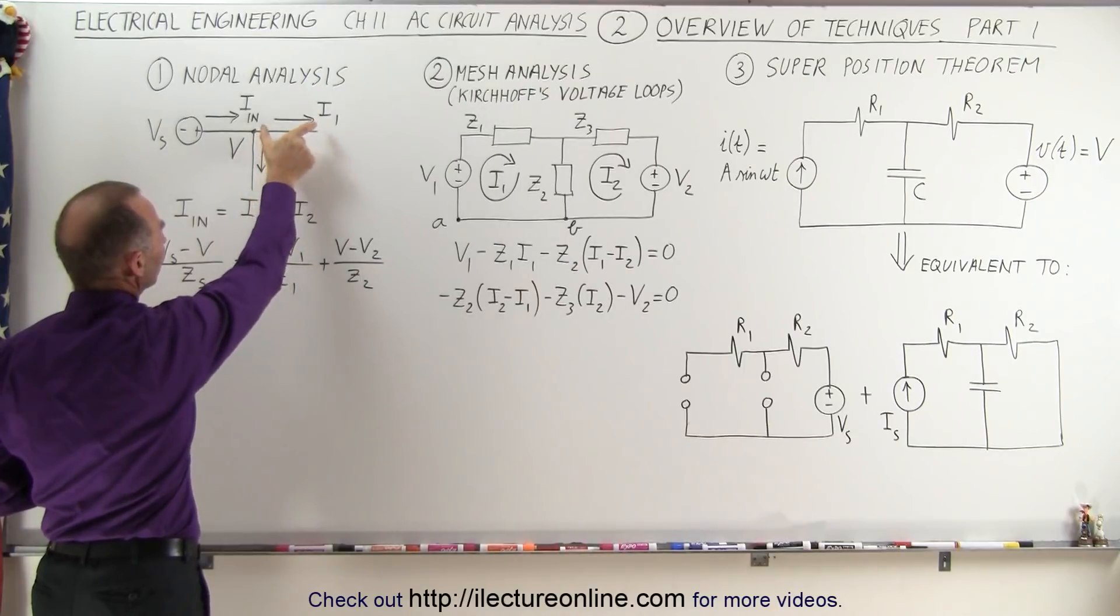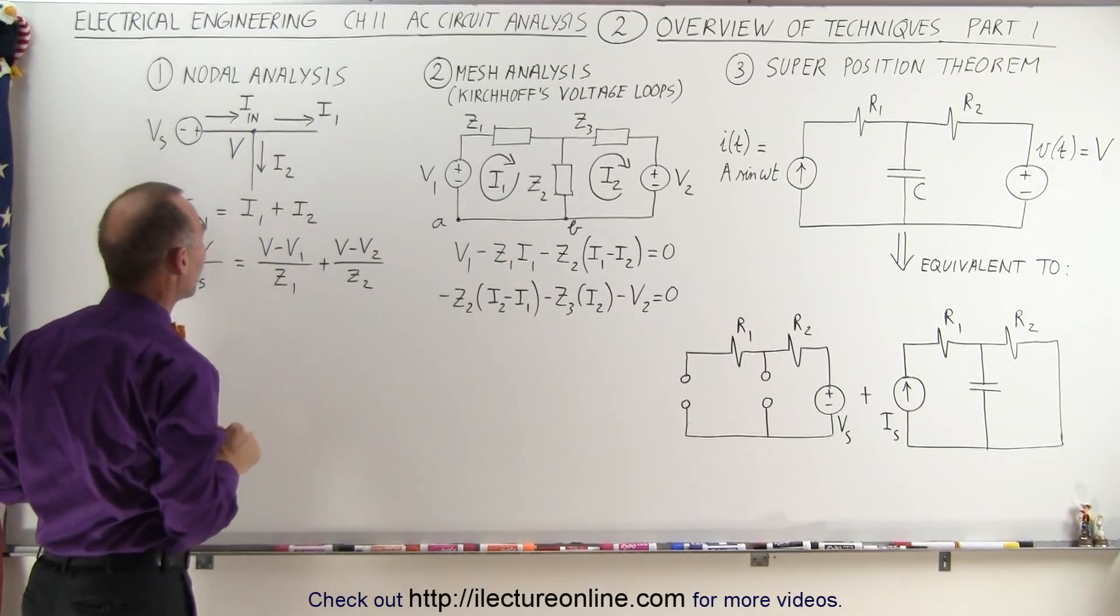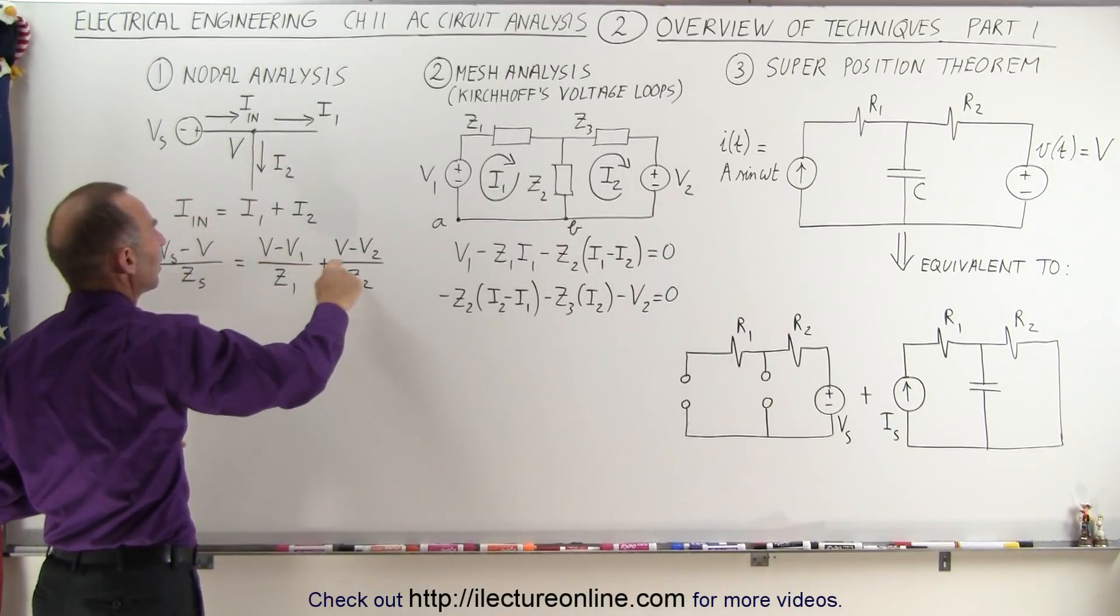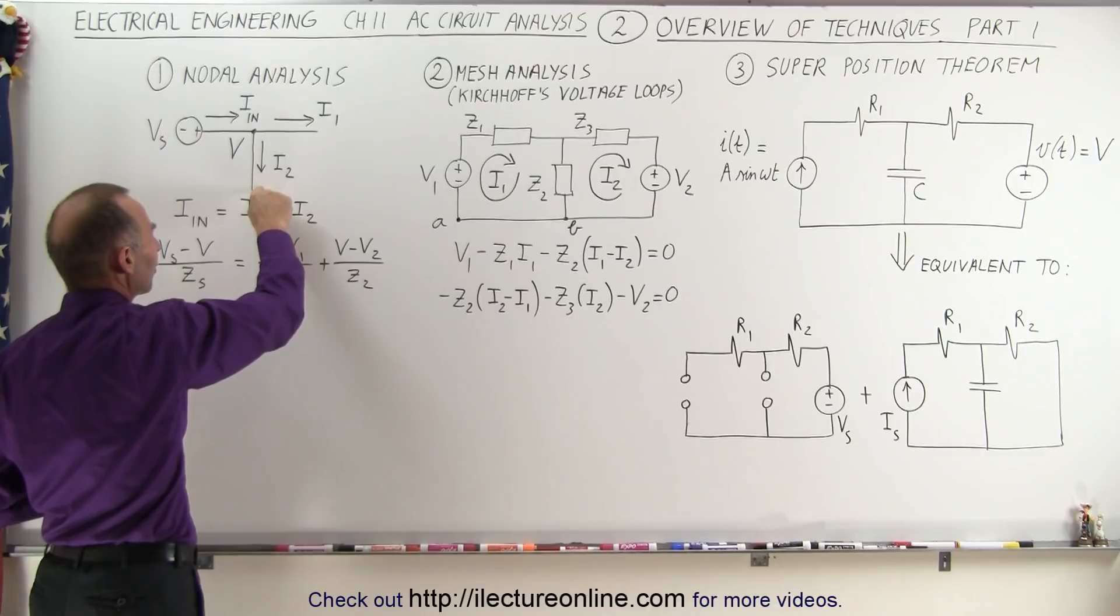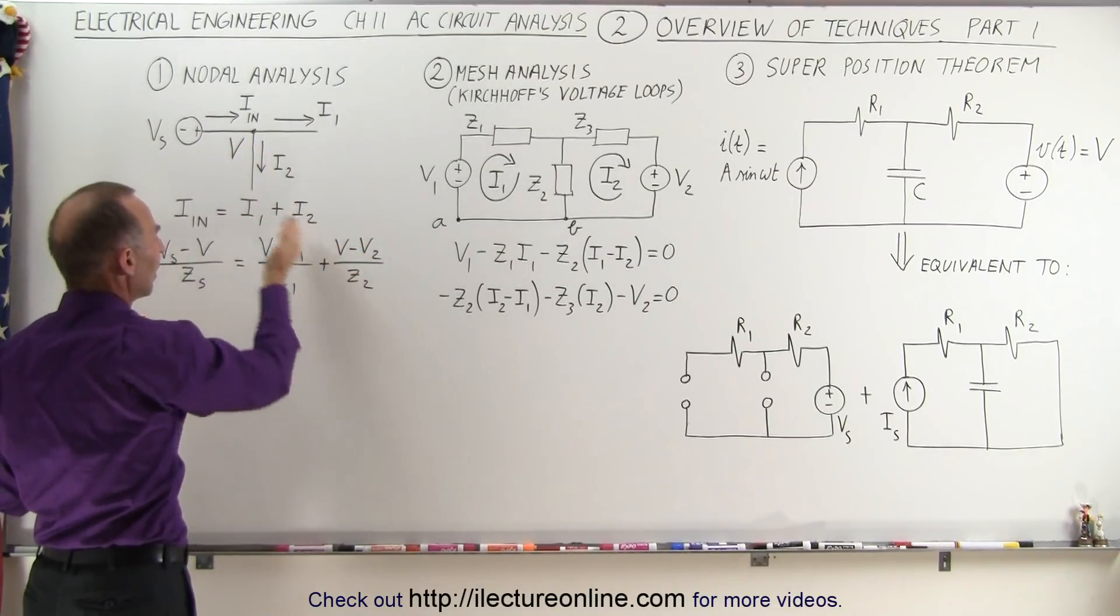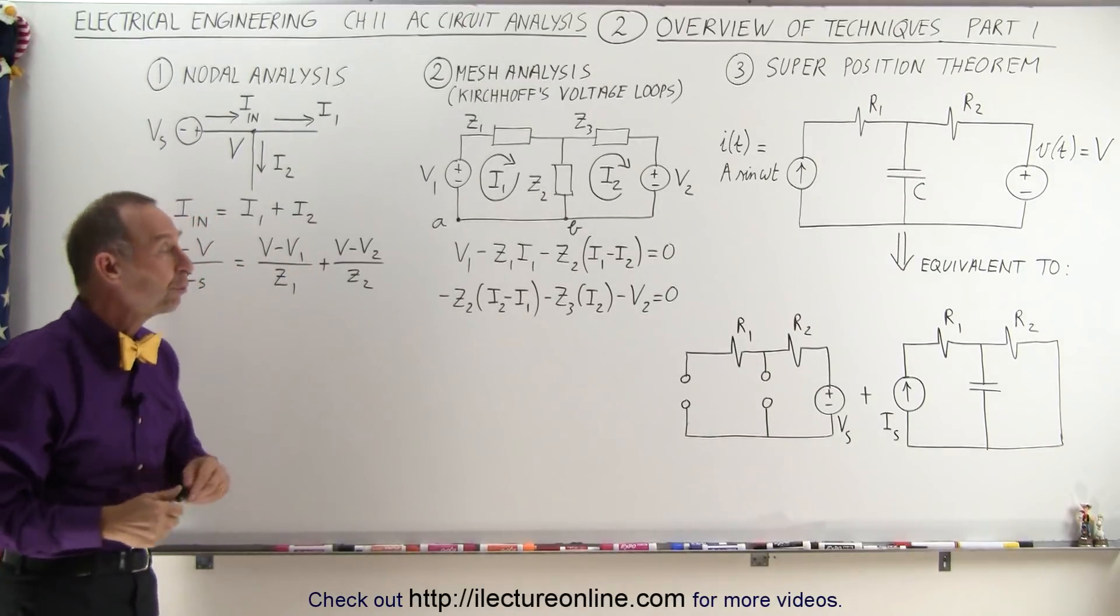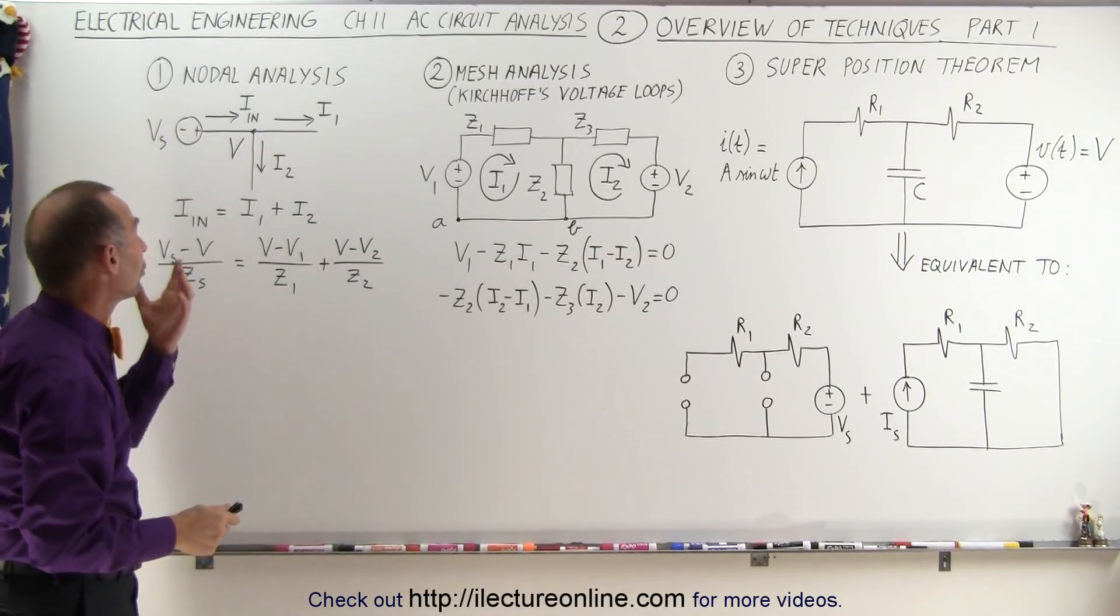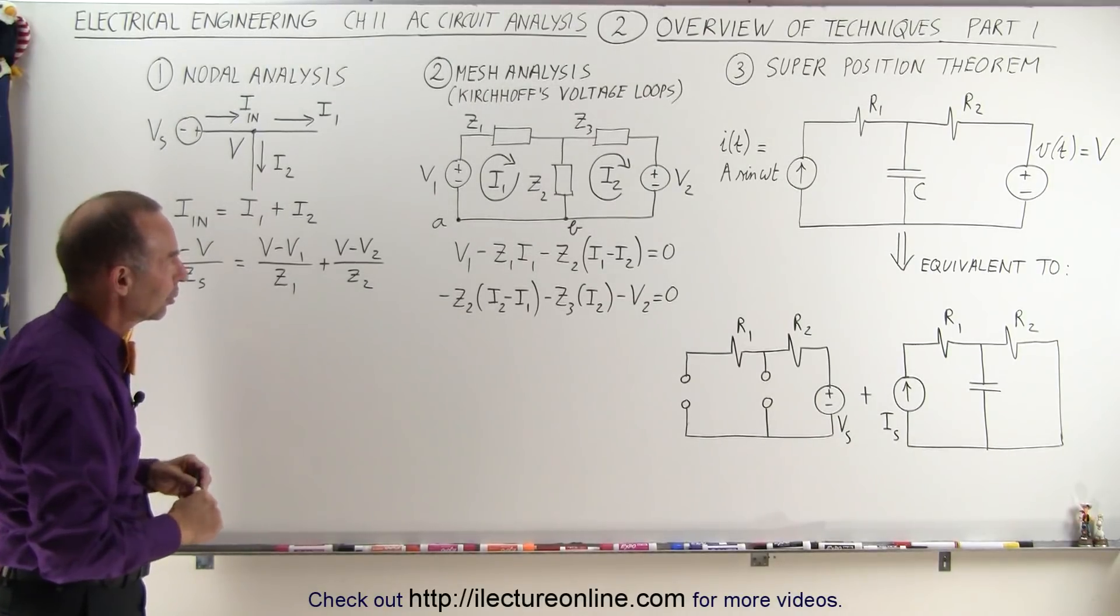I2 is the same thing. It will be the difference between the voltage at the node and whatever the voltage is on the other end of the branch, divided by the impedance on that branch. So we have this equation, which typically can then be solved for the voltage at the node. The nodal analysis is typically used to find the voltage at a particular node.